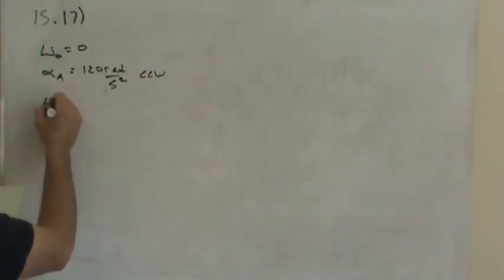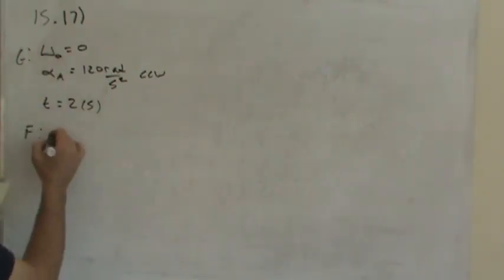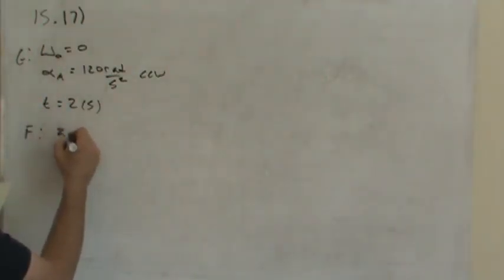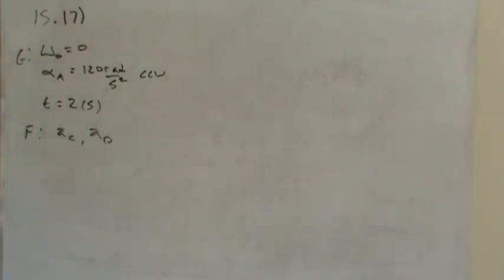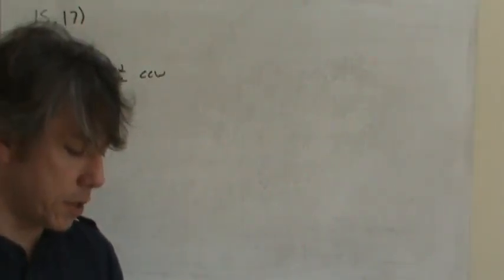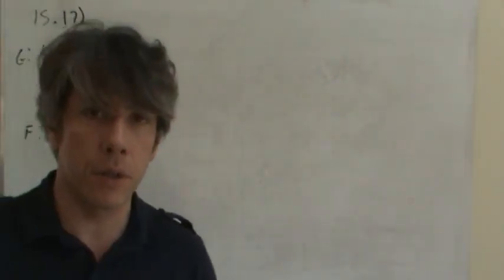We're given that two seconds have elapsed and we're supposed to find the acceleration of C and the acceleration of D at that particular time. Now if you look at the figure, you'll notice that D is at the workstation. So at D, the acceleration of point D is only going to have a tangential component.